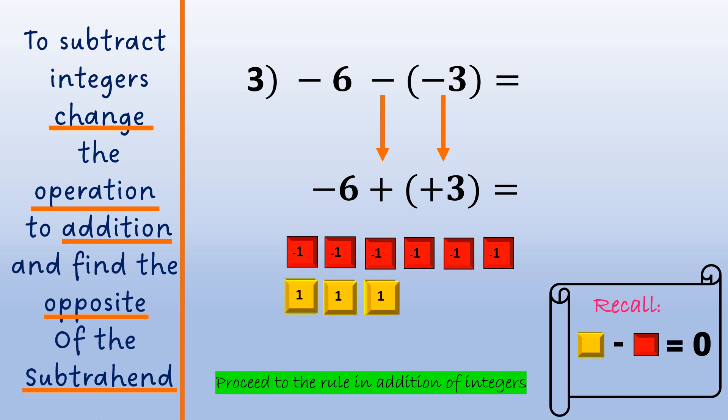Recall that one yellow tile plus one red tile is equal to 0. So we take out 3 pairs of yellow and red tiles. We have 3 red tiles left, or we have negative 3. Negative 6 plus positive 3 is equal to negative 3. So negative 6 minus negative 3 is equal to negative 3.